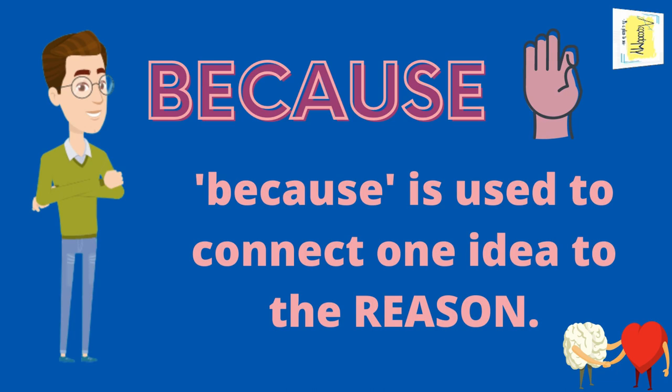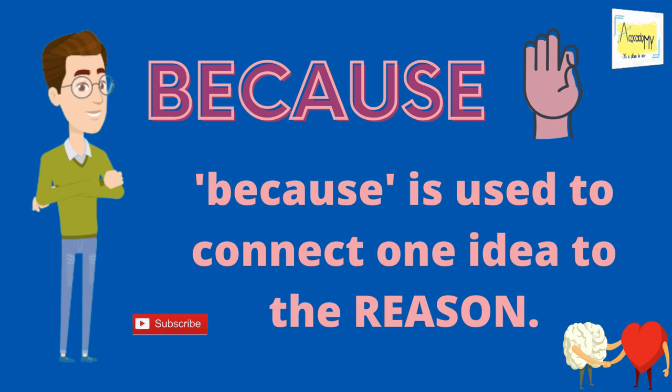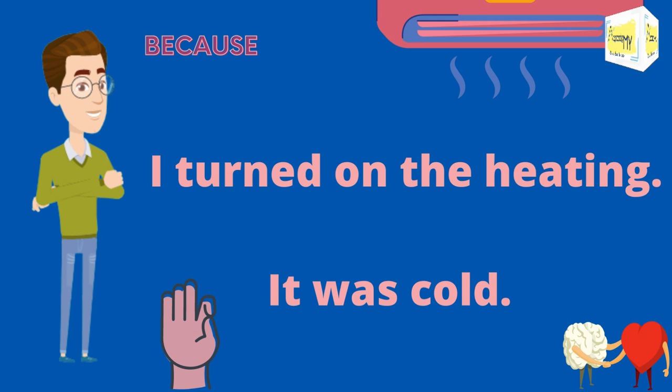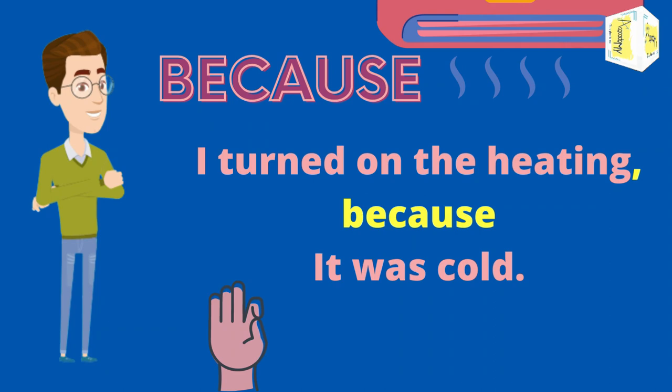The last conjunction is 'because.' 'Because' is used to connect one idea to its reason. For example: 'I turned on the heating.' 'It was cold.' There's a reason why the heating was turned on, so we combine them: 'I turned on the heating because it was cold.'